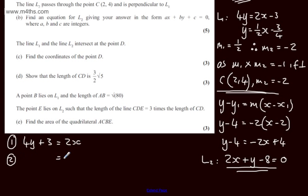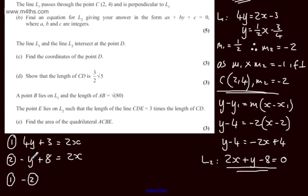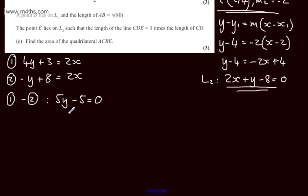There are lots of different ways to solve these simultaneous equations. I'll rewrite equation 2 so that 2x equals minus y plus 8. Subtracting equation 2 from equation 1, we get 5y, and 3 minus 8 gives minus 5, while 2x minus 2x equals 0. So 5y equals minus 5, which means y equals 1.